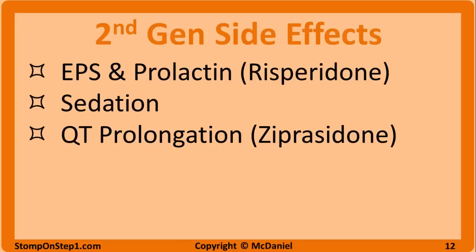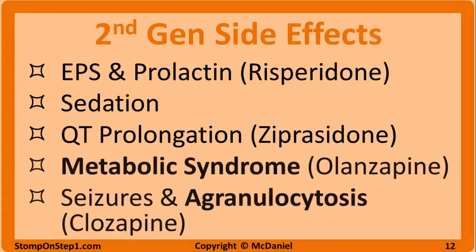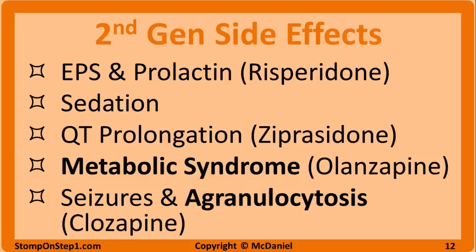Clozapine and quetiapine are the least like the typicals, as they essentially never cause EPS or hyperprolactinemia. So if you're using a typical antipsychotic and need to switch based on side effects, quetiapine is probably the best option. Like some first-gens, most second-gen antipsychotics also commonly cause sedation. QT prolongation is seen in both classes and is especially common with ziprasidone. A unique side effect of atypical antipsychotics is metabolic syndrome — diabetes, weight gain, hyperlipidemia, etc. — so patients should have their weight, blood pressure, blood glucose, and lipids monitored regularly. Olanzapine and clozapine are the worst for metabolic syndrome and should be avoided in patients with diabetes or obesity. Ziprasidone and aripiprazole cause metabolic syndrome less than the other second-gens.